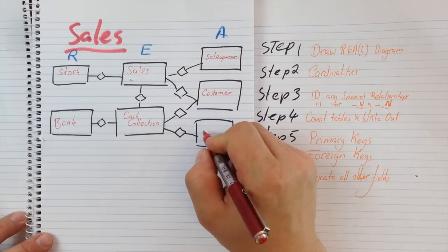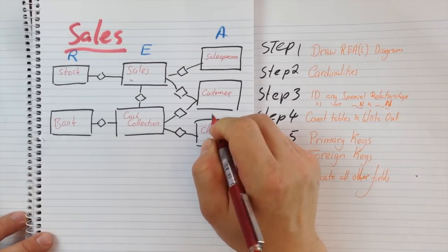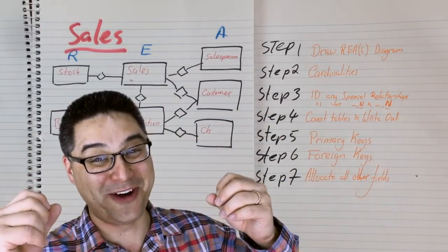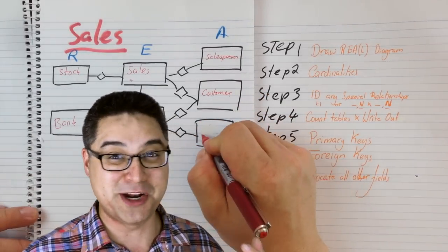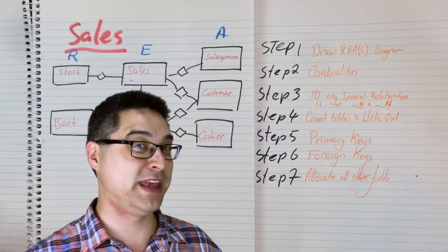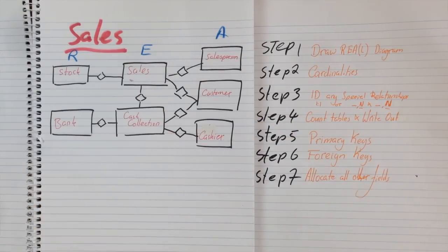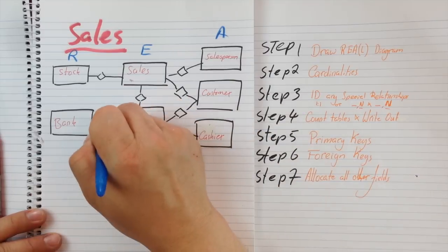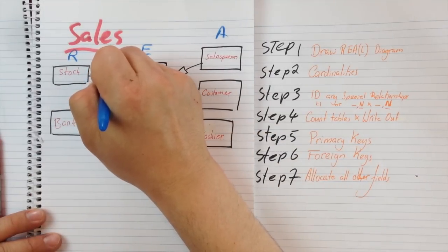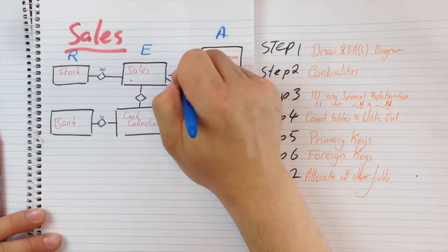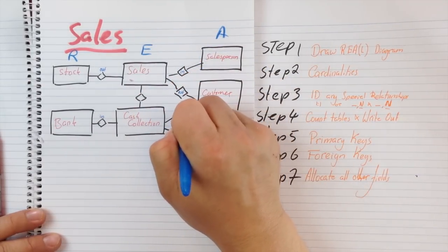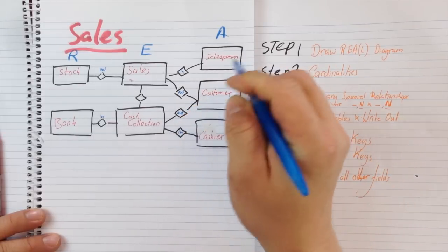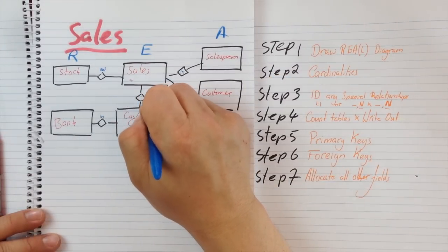This will then result in a cash collection collected by a cashier. I'd like to apologise if I've got any spelling mistakes or stupid handwriting — I am the generation that basically just grew up with keyboards. I should quickly go ahead and fill these in: inflow, outflow, inside, outside, outside, inside, and this one here is a duality.